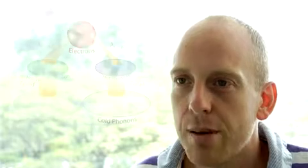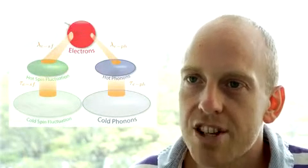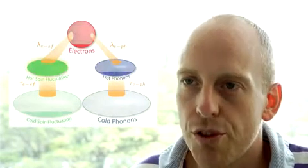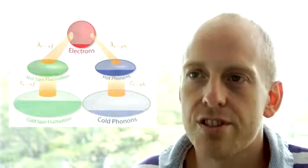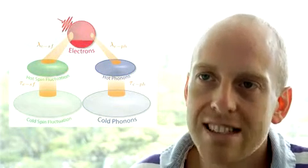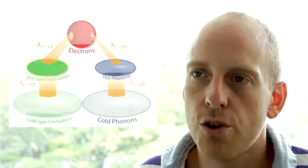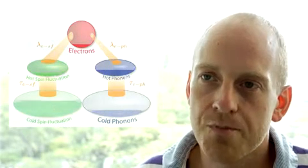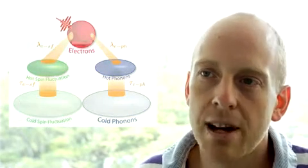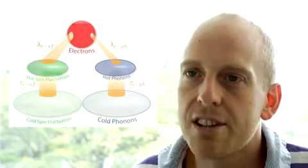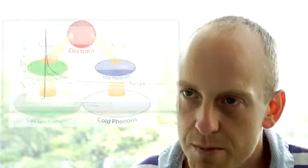To address the strong doping dependence of the relaxation line shapes, we extended the three-temperature model by adding an additional bosonic mode. We therefore proposed a five-temperature model where the electron relaxation process is mediated by both phonons and spin fluctuations. In this model, the photo-excited electrons transfer their energy to hot phonons and hot spin fluctuations. The strength of these couplings is determined by the electron-phonon and electron spin-fluctuation coupling constants respectively.